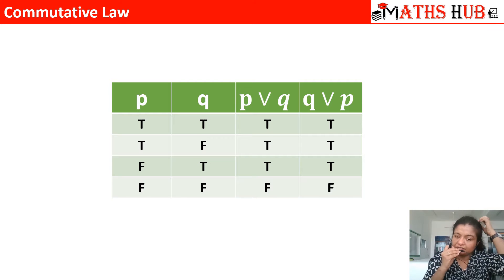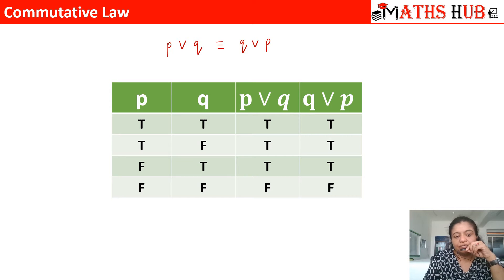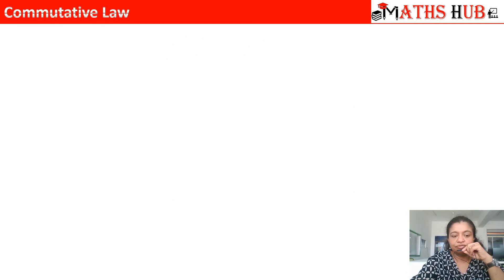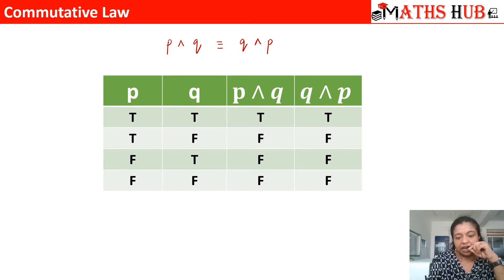We can also prove the commutative law with the help of the truth table. We have two inputs P and Q and we make a column for P OR Q and another for Q OR P. Taking inputs true-true, true-false, false-true, false-false, both columns are exactly the same, so the two statements are logically equivalent. Similarly, P AND Q is equivalent to Q AND P — both truth value columns match each other.